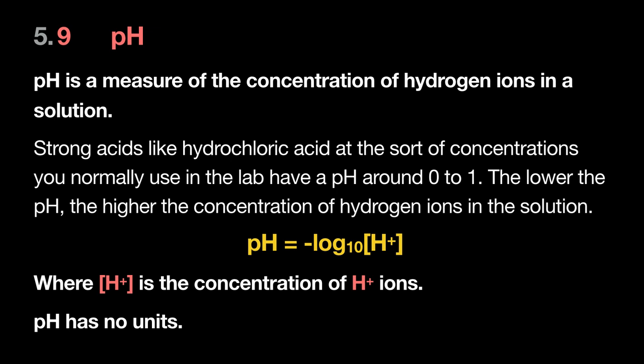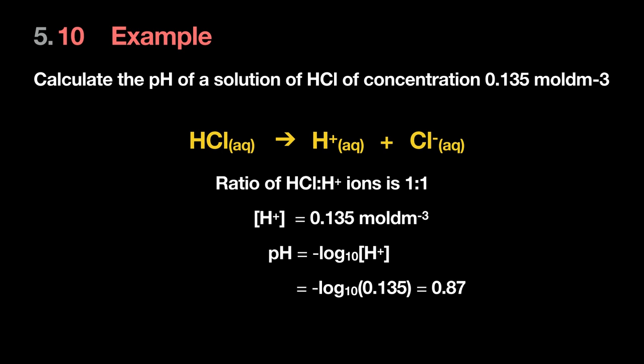For the pH of HCl, since it completely ionizes in a 1:1 ratio, the H⁺ concentration equals the HCl concentration. Plug that into pH = −log[H⁺]. In this example the answer is 0.87. pH is typically quoted to 2–3 significant figures depending on the question. Note there are no units on pH because logging removes units.